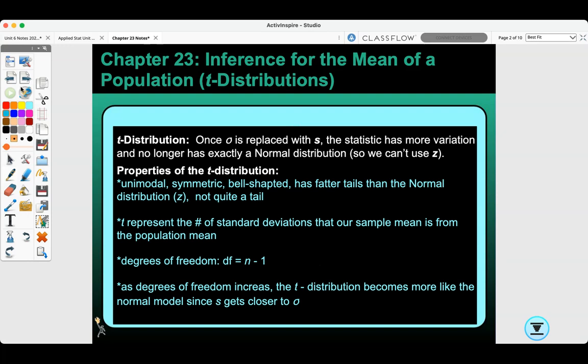T distribution: Once sigma is replaced with s, the statistic has more variation and no longer has exactly a normal distribution, so we can't use z. Properties of the T distribution are: it's unimodal, symmetric, bell-shaped, has fatter tails than the normal distribution, but not quite a tail. T represents the number of standard deviations that our sample mean is from the population mean. The degrees of freedom is n minus 1, and as the degrees of freedom increase, the T distribution becomes more like the normal model since s gets closer to sigma.